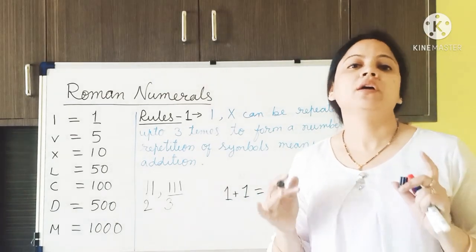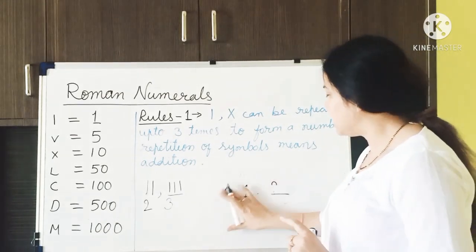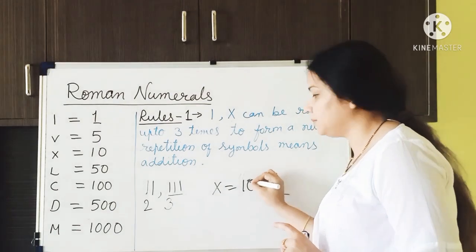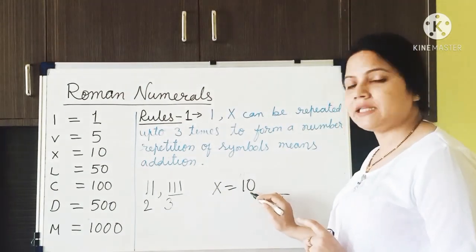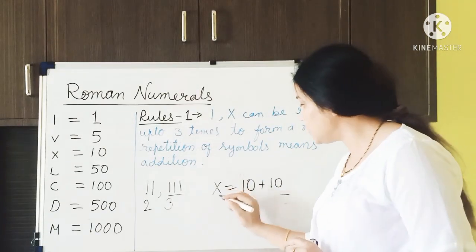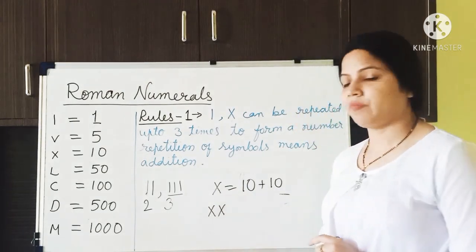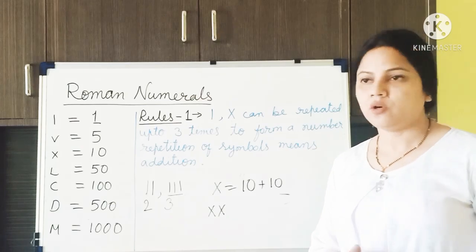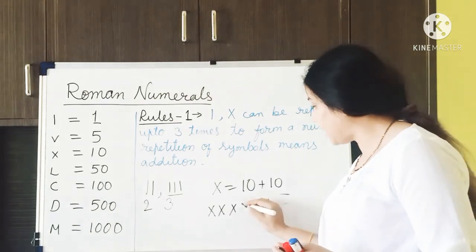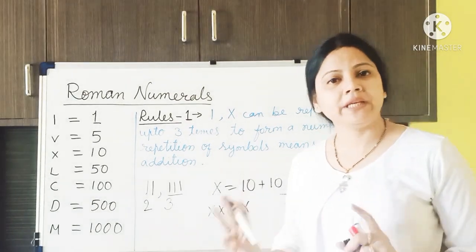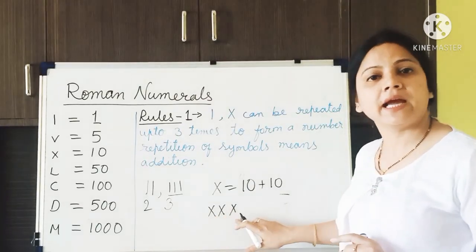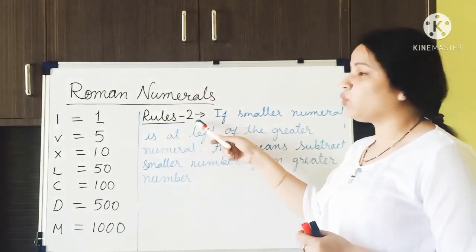Repetition means addition. For example, X equals 10. To write 20, we write XX (10+10=20). To write 30, we write XXX (10+10+10=30). But we cannot write 40 as XXXX because we can only repeat a symbol up to 3 times.